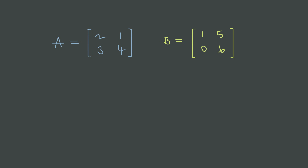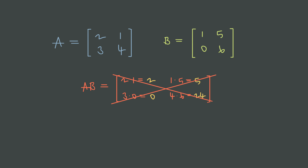If I gave you these two matrices and asked you to multiply them, what would be your first guess? Most people would probably try to multiply the numbers that are in the same spot — 2 times 1, 1 times 5, and so on. And that seems logical, but that's not how matrix multiplication works.